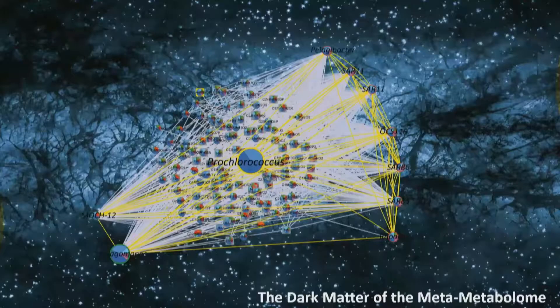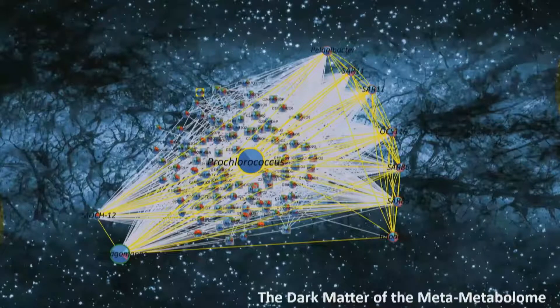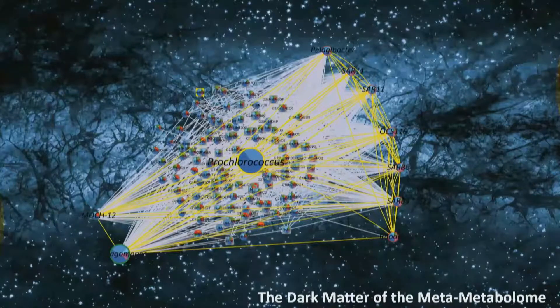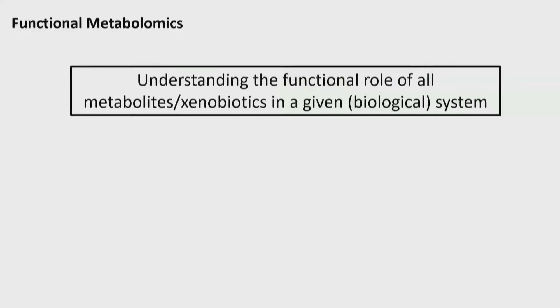This is a really good example of the dark matter of the metabolome of environmental samples. To shed light on that, what we have to do is systematically add functional analysis in parallel to the non-targeted metabolomics screening. This is actually now the mission of my lab.